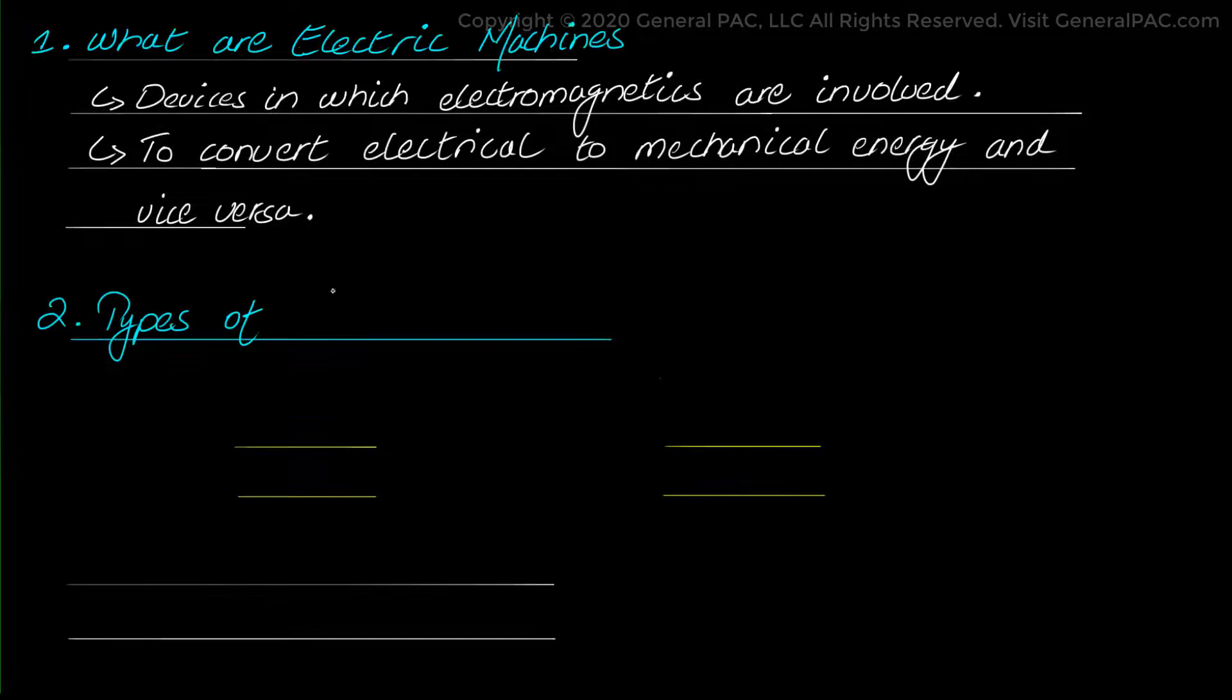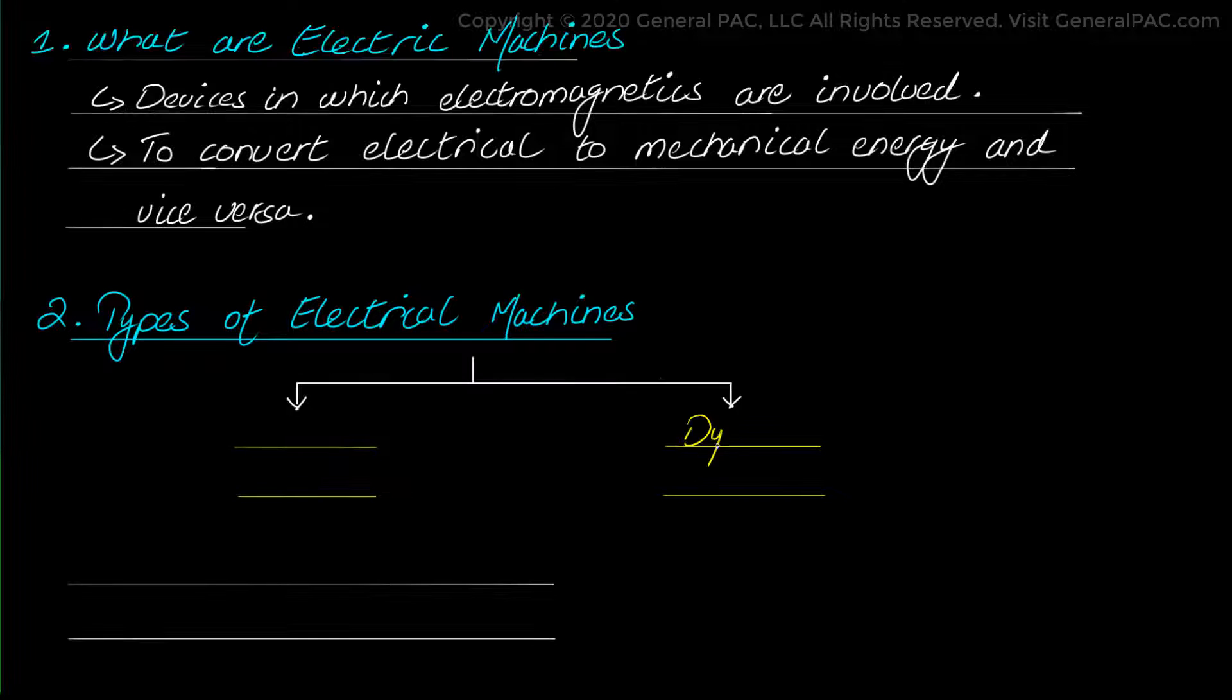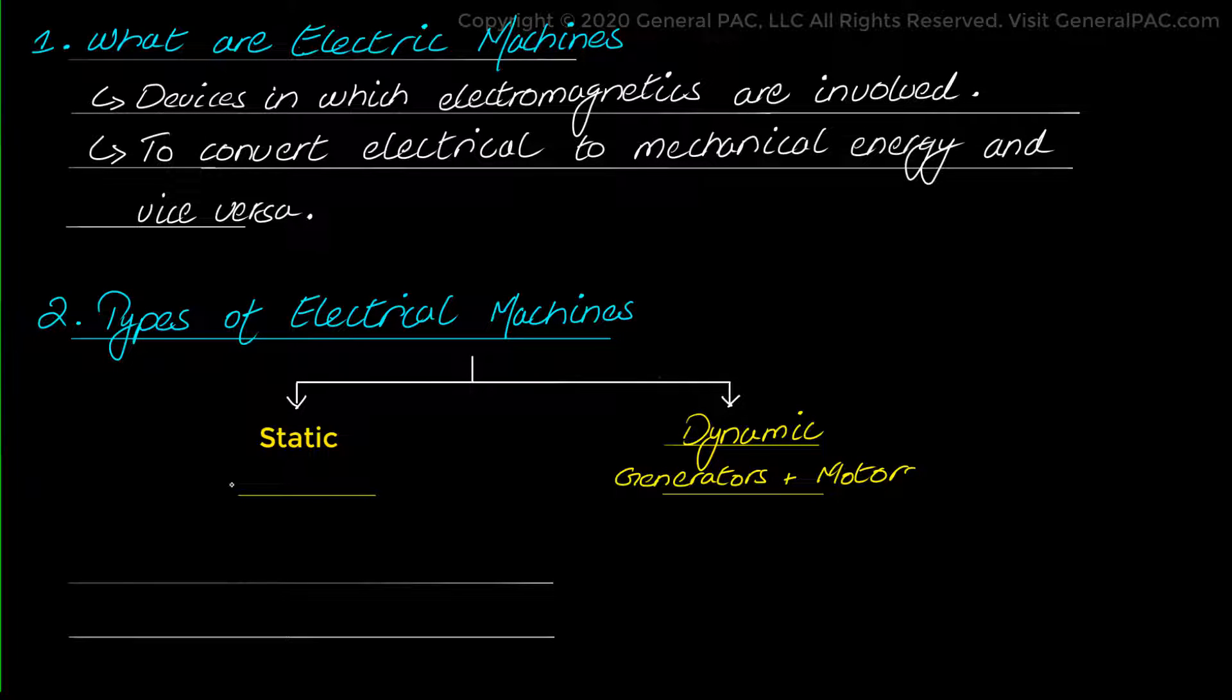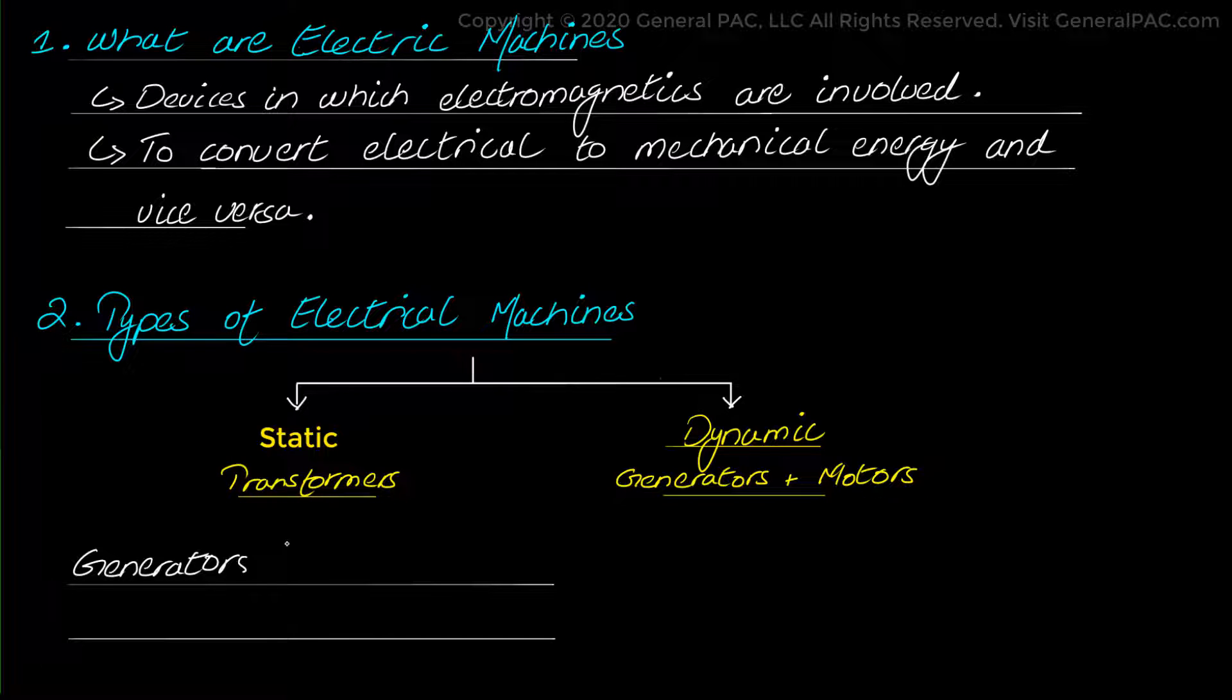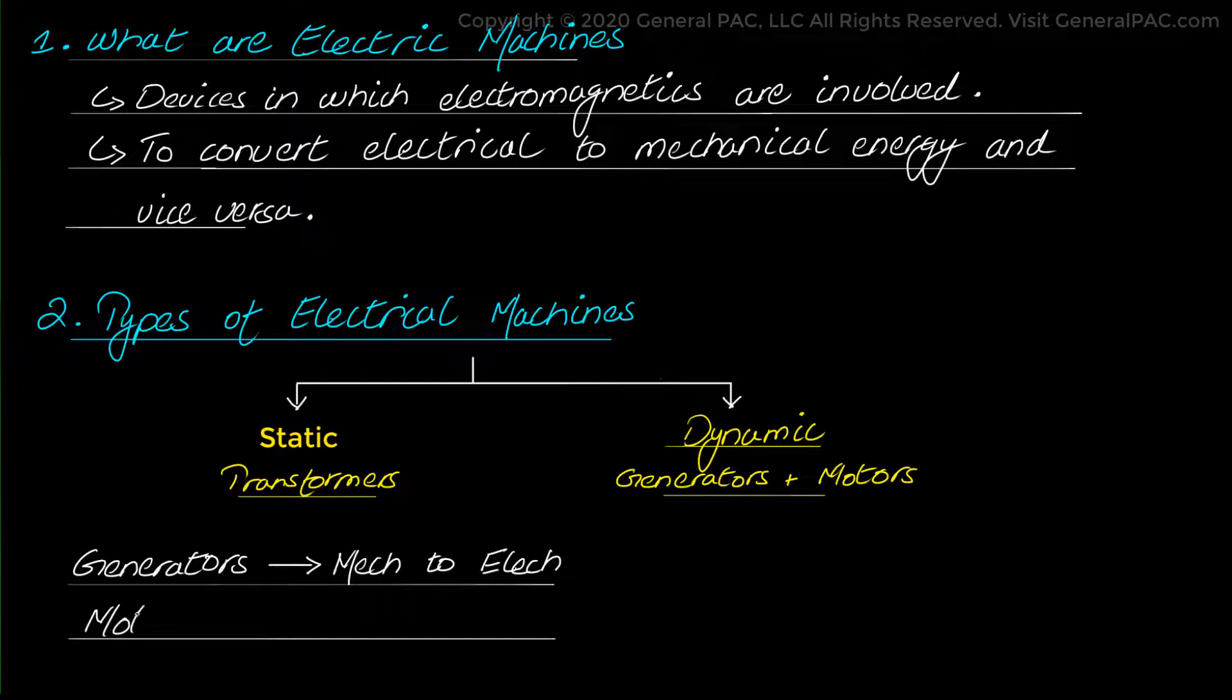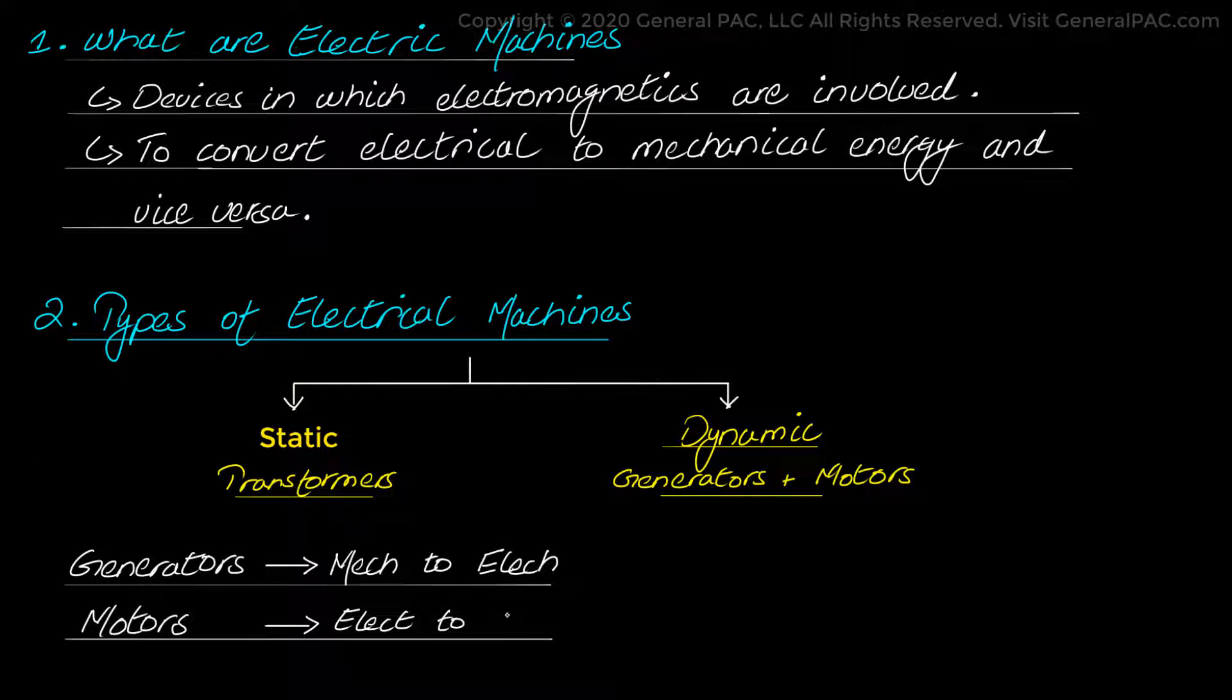So the electrical machines which involve rotating parts are called dynamic machines and those having stationary parts are called static machines. So the dynamic machines include our typical generators and motors and on the other hand, static machines include transformers. Now generators are machines which convert mechanical energy to electrical energy and motors perform the task of converting the electrical energy to mechanical energy.